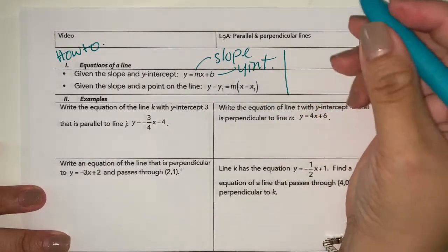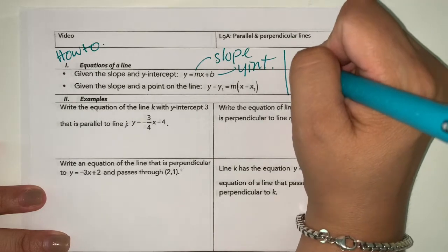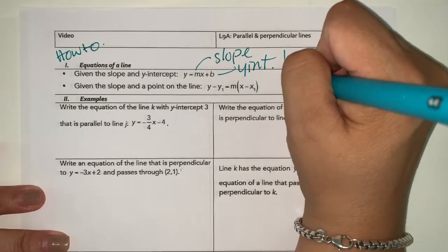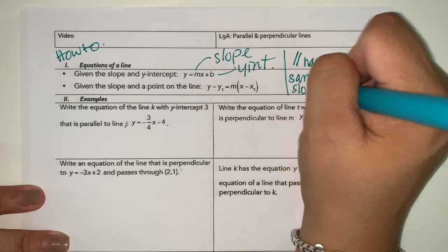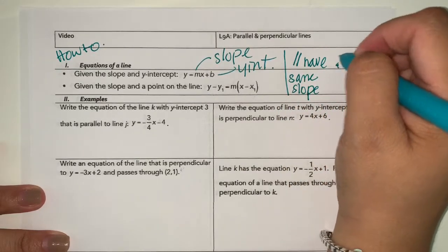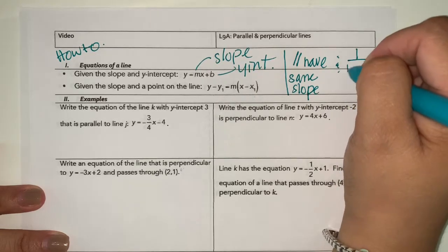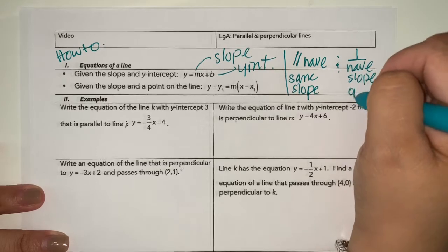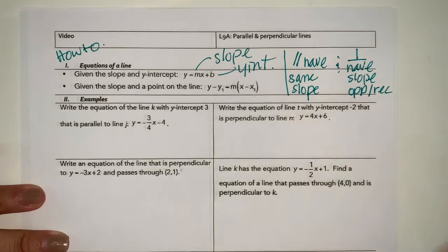Here's what you need to know: parallel lines have the same slope, and perpendicular lines have slopes that are the opposite sign and reciprocals of each other.